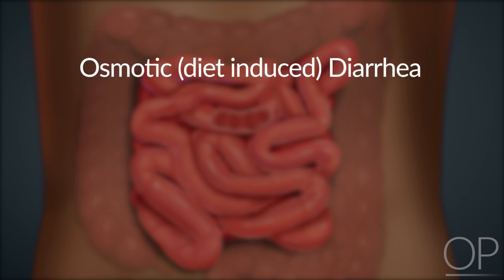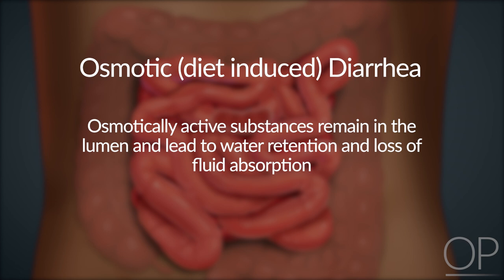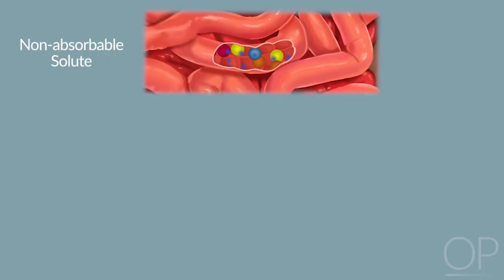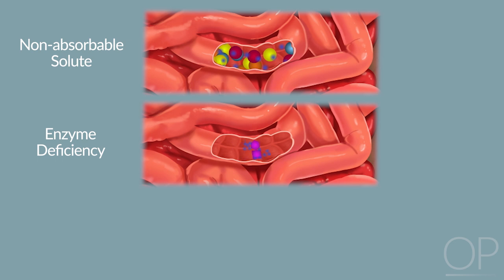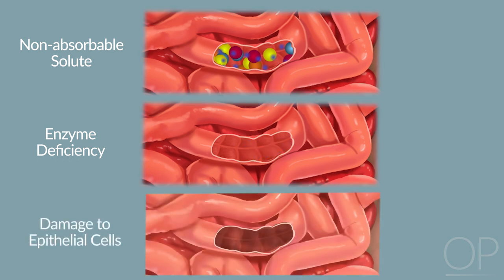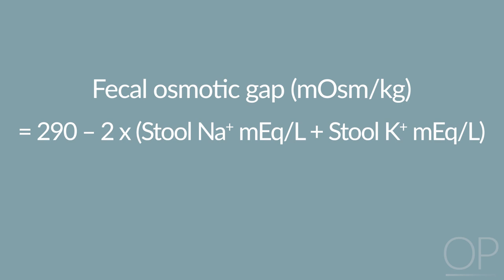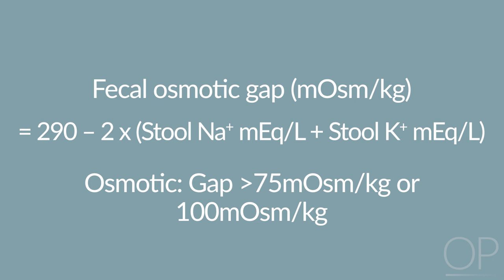Another kind of diarrhea, termed osmotic or diet-induced diarrhea, occurs when osmotically active substances remain in the lumen and lead to water retention and loss of fluid absorption. This may occur in the presence of a non-absorbable solute such as polyethylene glycol, or be due to reduced nutrient absorption. Examples of reduced nutrient absorption include enzyme deficiencies that prevent the breakdown of certain sugars, such as lactase deficiency, or damage to the epithelial cells by infection, inflammation, or an autoimmune process, which reduces absorptive capacity. To determine whether the diarrhea is predominantly osmotic or secretory, providers can test stool and calculate a fecal osmotic gap in milliosmols per kilogram, which is equal to 290 minus 2 times the stool sodium plus the stool potassium.